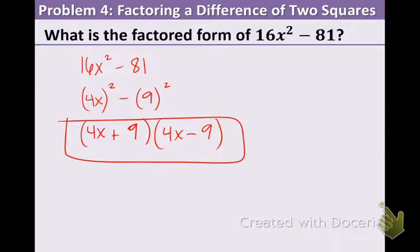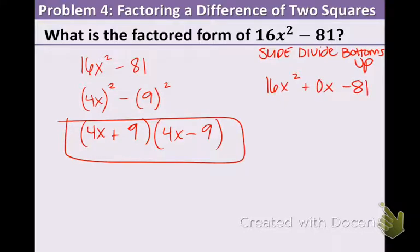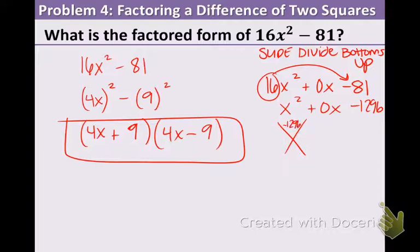Now, I'll show you the slide divide bottoms up method, just in case you want to see. The shortcut is obviously faster, but I do want to show you the other way just in case you prefer this way. So again, like the previous problem we don't have a middle term so there must be a 0 there. The first thing that I want to do is take the 16 and multiply it to the negative 81. So we get x squared plus 0x minus 1,296.